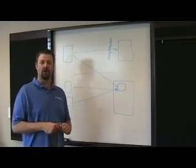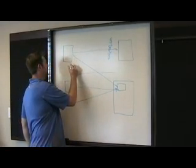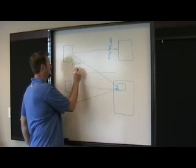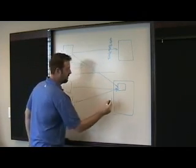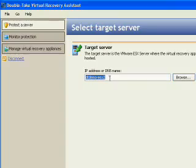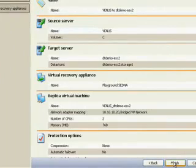The way the Virtual Recovery Assistant works, for each hard drive on your protected source machines, we create a VMDK file on the ESX target.